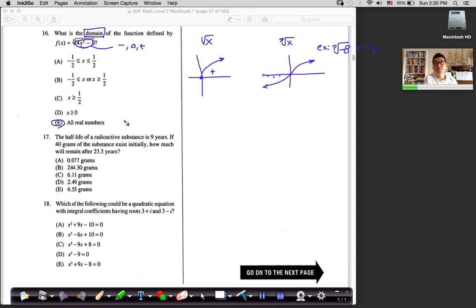So that will be my intuitive way of solving this question instead of punching this in the calculator. But for most of the students, if you're not sure, you feel uncomfortable doing this intuitive method, then put this in your calculator, graph it, and see how it looks like. And then you will see that all real numbers are possible.